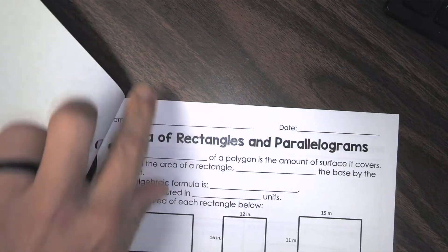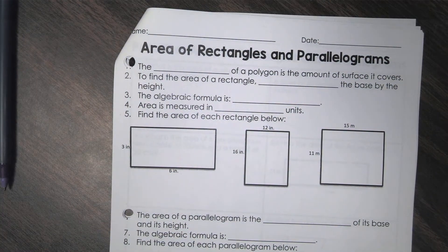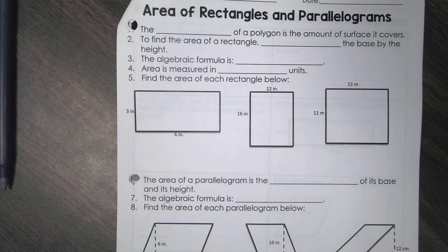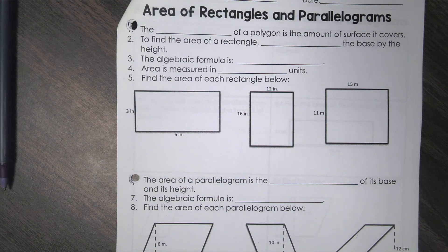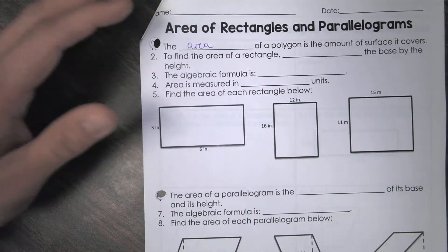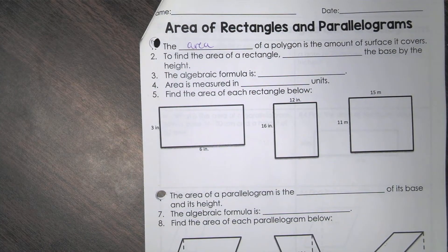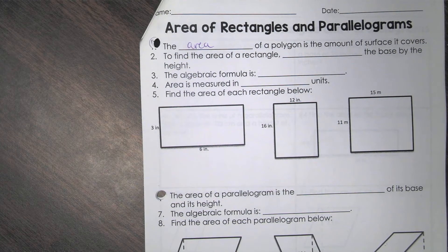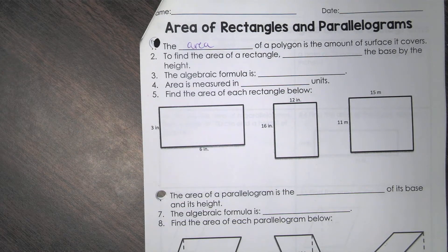So on the first page here, it talks about area of rectangles and parallelograms. The first one, the blank of a polygon is the amount of surface it covers. That is the area of a polygon. The area is talking about how much space that shape or figure actually takes up.